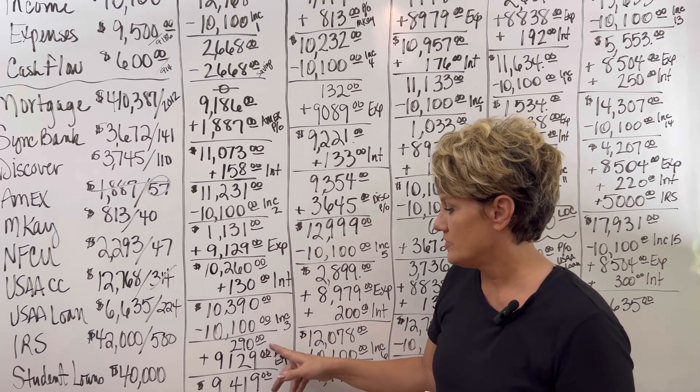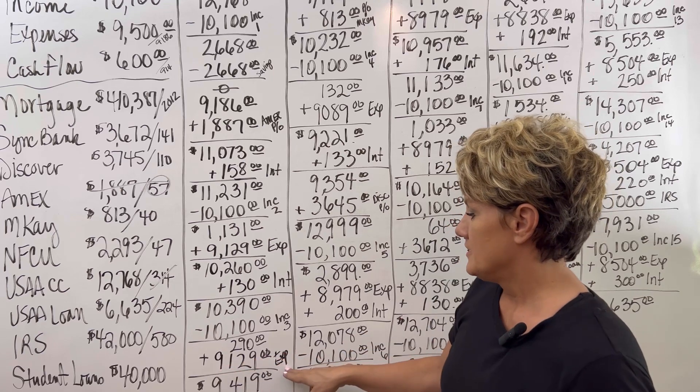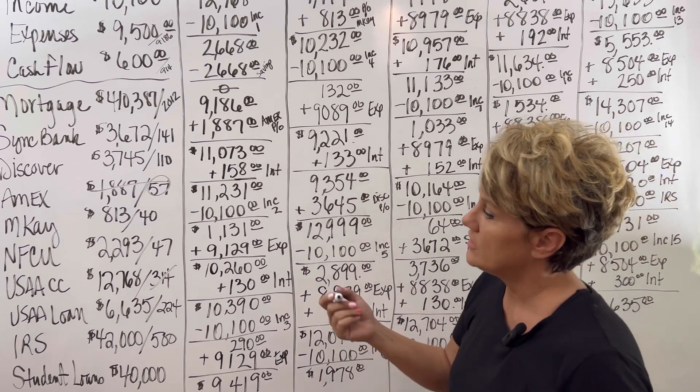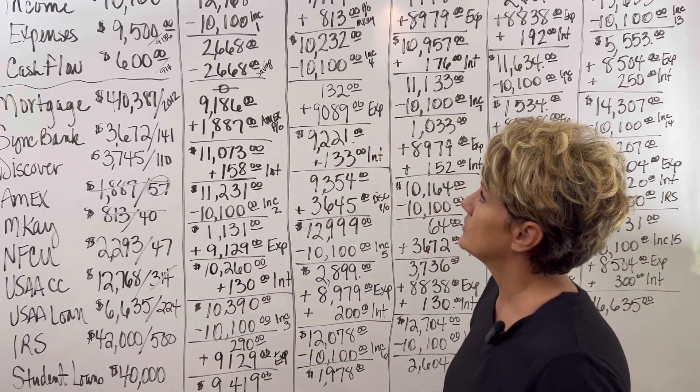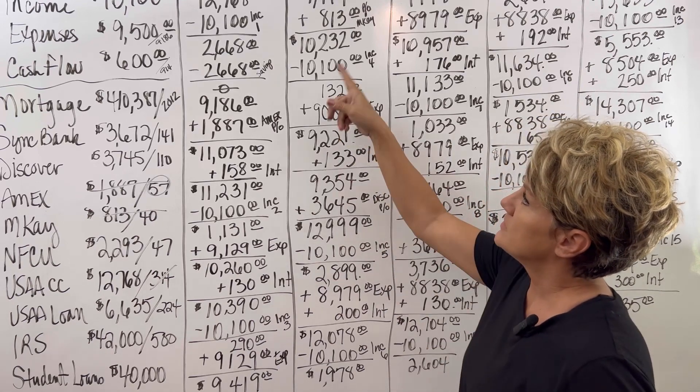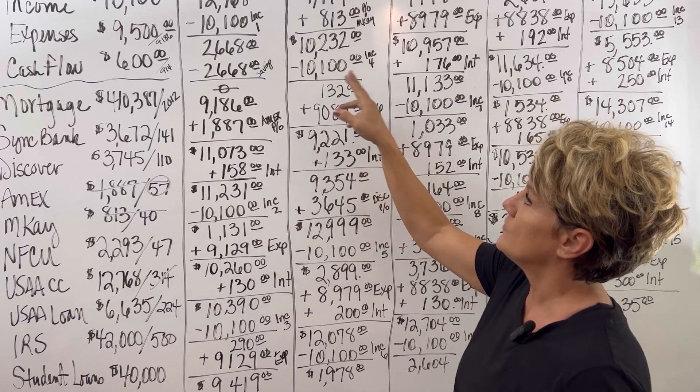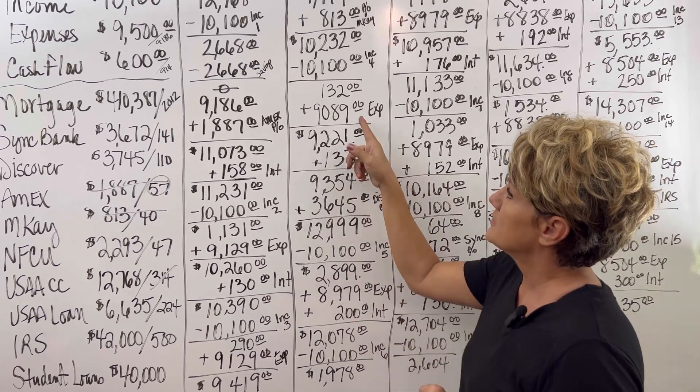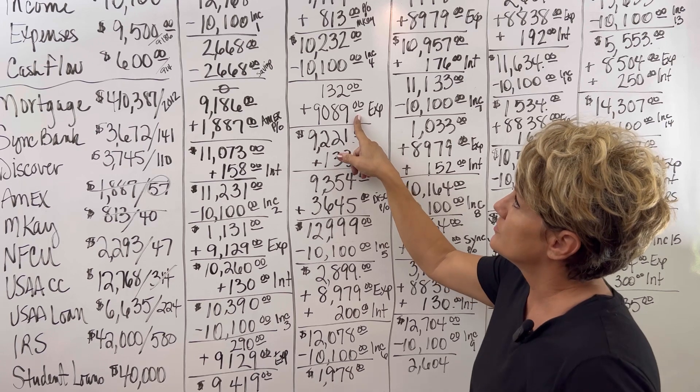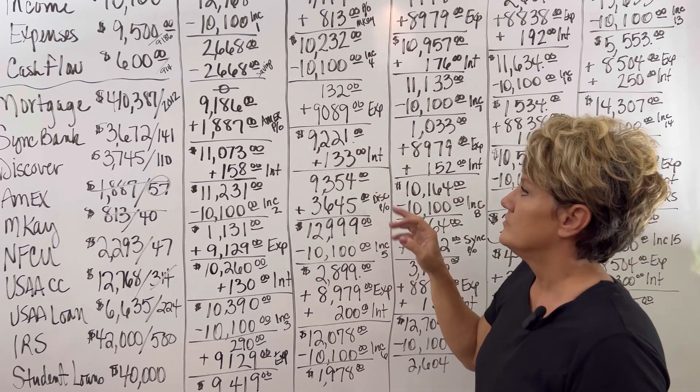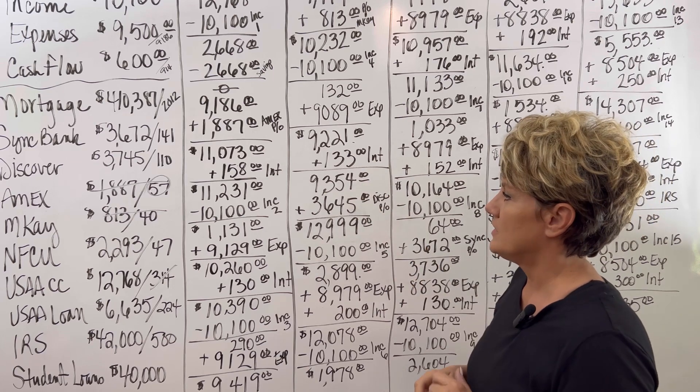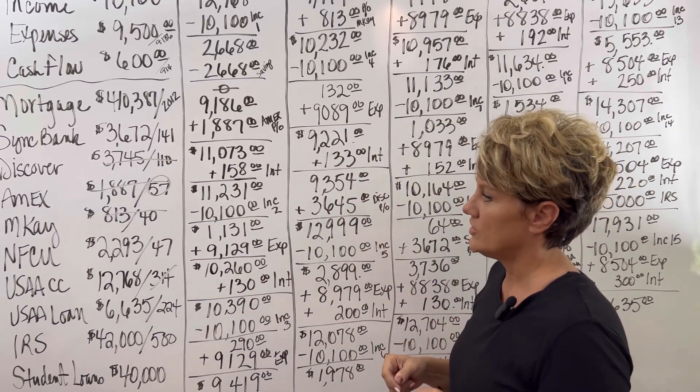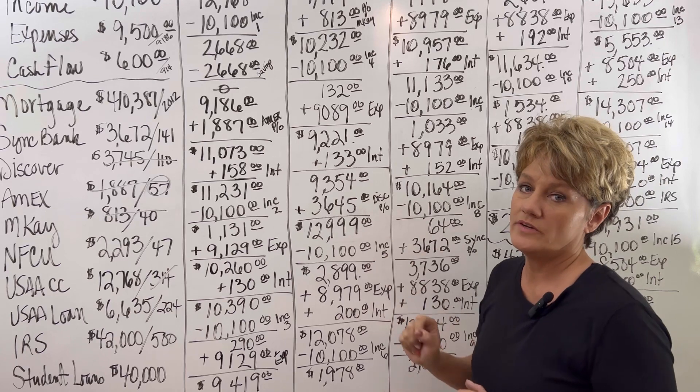So in month three, income three goes in, bringing it to $290. You'll then add in the expenses at $9,129, bringing your balance back up to $9,419. We're going to pay off Mary Kay next to $813. There's $40 more in cash flow. The balance is up to $10,232. The income for month four comes in at $10,100, bringing the balance down again to $132. The expenses are now at $9,089 because we paid off the Mary Kay. The interest being added in brings the balance back up to $9,354. We are now going to pay off Discover at $3,745, giving us $110 more in cash flow, bringing the balance up to $12,999.